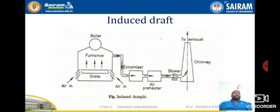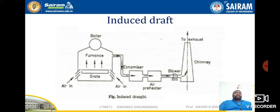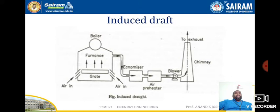The next type is the induced draft system. Here the blower is located near the base of the chimney, unlike the forced draft where it is near the furnace. Air is sucked through the system, reducing pressure below atmospheric. The induced draft fan sucks the burnt gases from the furnace, reducing temperature inside the furnace below atmospheric pressure and inducing atmospheric air to flow through the furnace. The draft produced is independent of the temperature of the hot gases, so gases may be discharged as cold as possible after extracting as much heat as possible through the preheater.